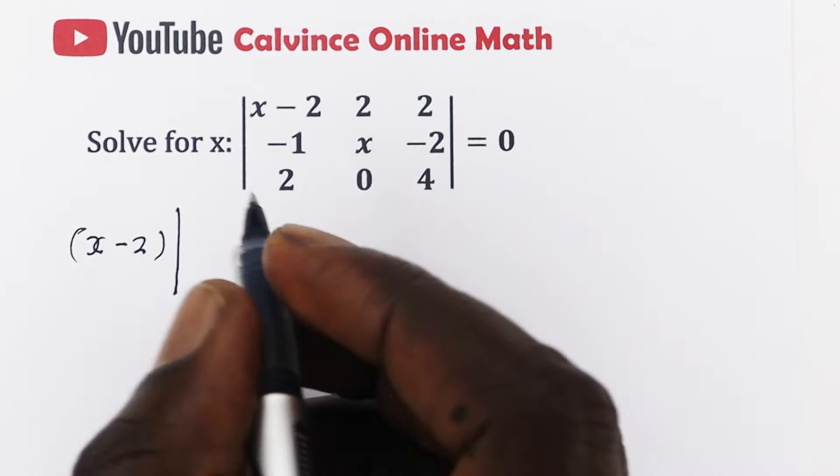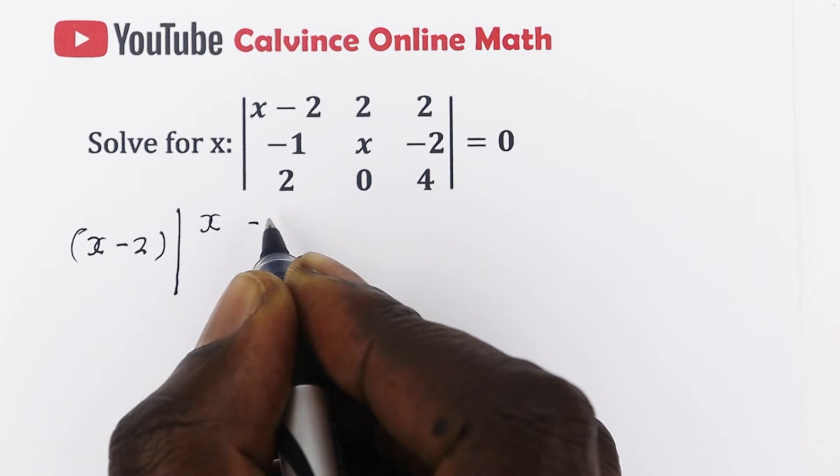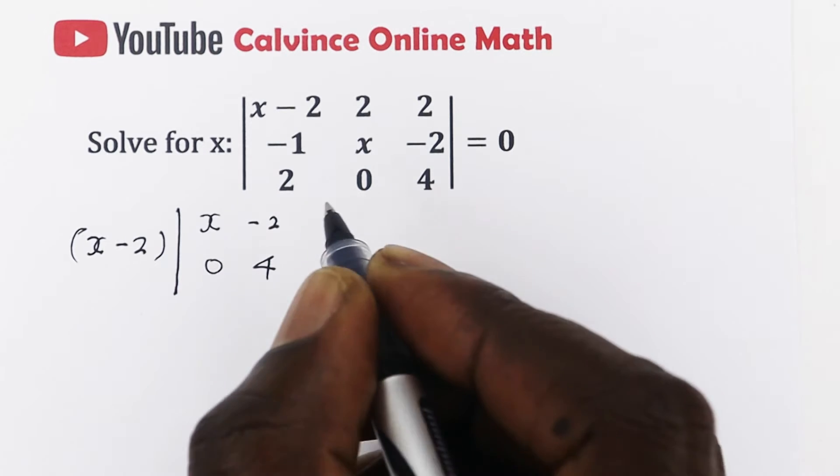So if you cover that row and that column, you're going to be left with x minus 2, 0, 4.